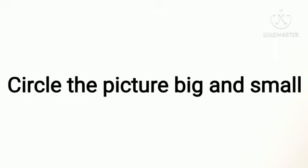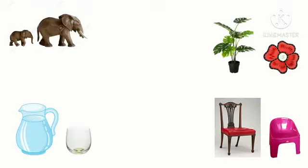Now we will go to the next question: circle the picture, big and small. Now I am going to show you some pictures. One small elephant and big elephant. Big plant and small flower. Big jar and small glass. Big chair and small chair.